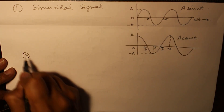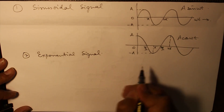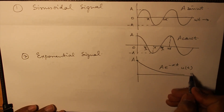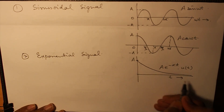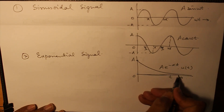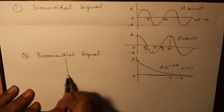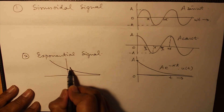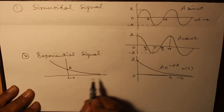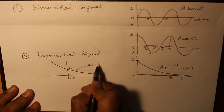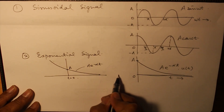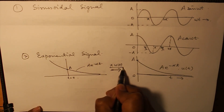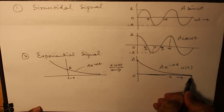The second kind of signal is the exponential signal: A·e^(-αt)·u(t). We multiply it by the unit step signal u(t) such that the value exists only for t greater than 0. Otherwise, the exponential signal would exist over all time, but on multiplication by u(t) you get the signal which is available only for t greater than 0.